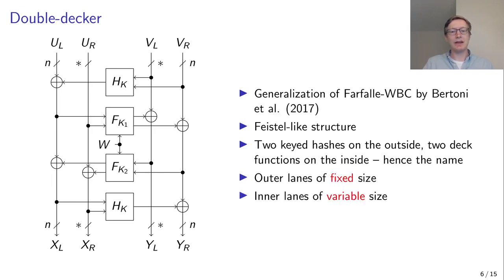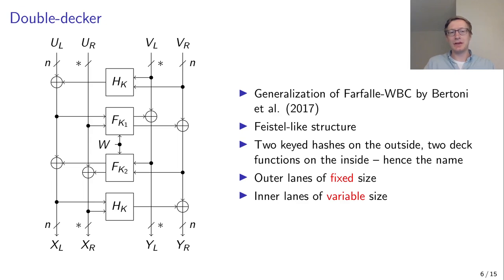The outer lanes have a fixed size, and the inner lanes have a variable size, meaning the keyed hash functions output to a fixed-size lane. The bulk of the data will be in the inner lanes, which are only processed three times. So the double-decker is actually more efficient than a normal four-round Farfalle network, because the bulk of the data is processed less.